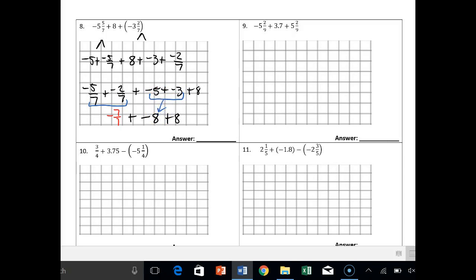So negative 7 over 7 is just negative 1 plus negative 8 plus 8. And now you could add negative 1 to negative 8 and then add 8, or you could recognize hey this is just 0, right? It's the additive inverse. So our answer ends up being negative 1.